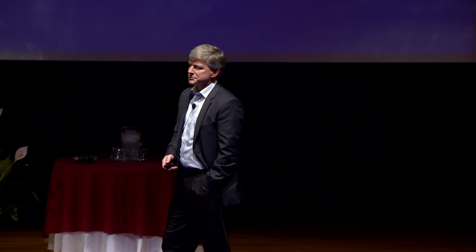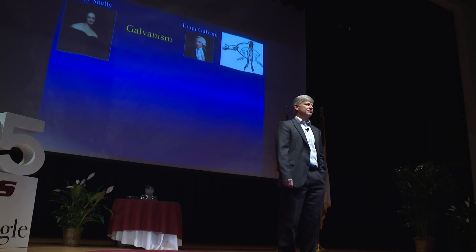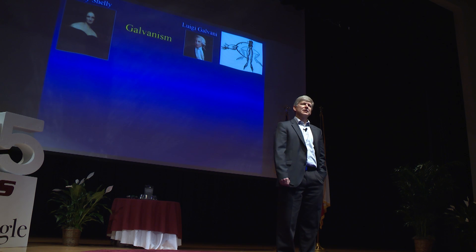In 1814, a young 16-year-old girl was traveling through Europe with three companions of hers. And like many teenagers of the day, they were interested in the paranormal, and one of their favorite topics was the topic known as galvanism. Galvanism derives from a scientist named Luigi Giovanni, who had discovered about 20 years earlier in the 1780s and 90s that if you applied an electrical impulse to a frog corpse, the legs would contract.